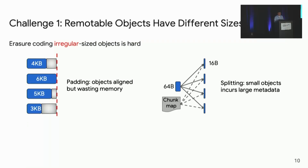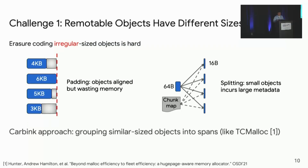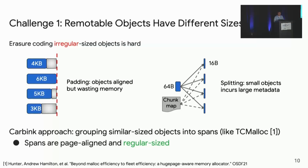To efficiently erasure-code irregular-sized objects, Carving's approach is to group similar-sized objects into spans — similar to how some memory allocators like Google's TCmalloc manage their objects. These spans are page-aligned and regular-sized, thus well-suited for erasure coding.